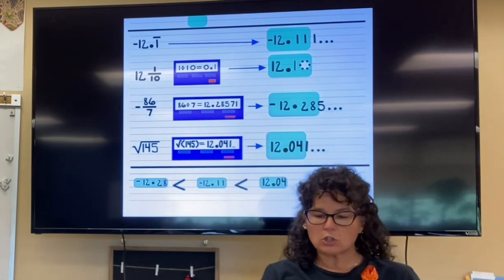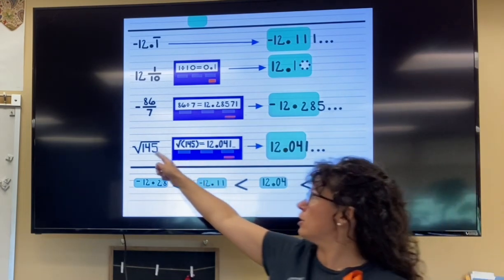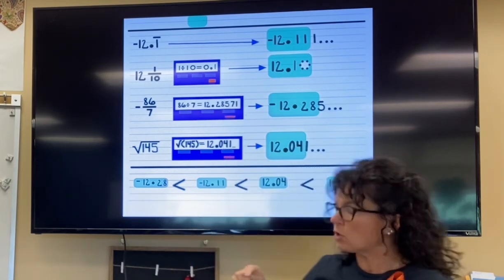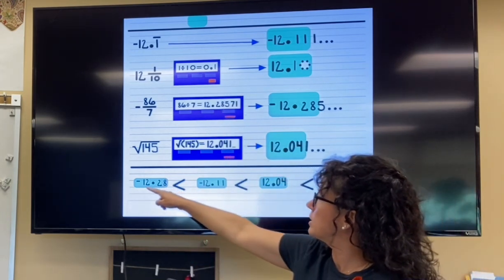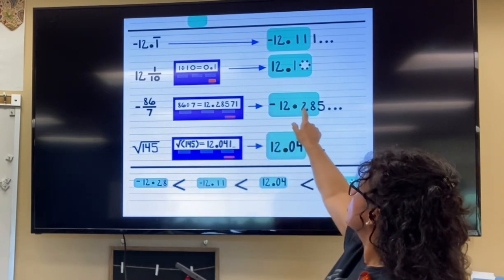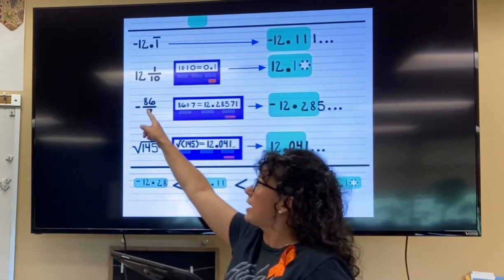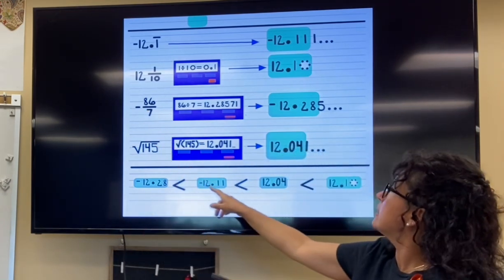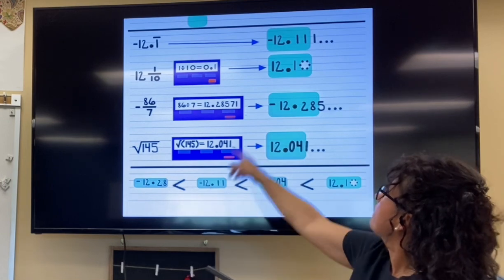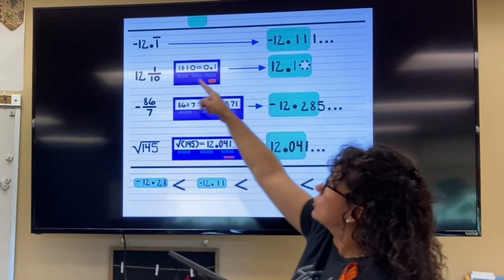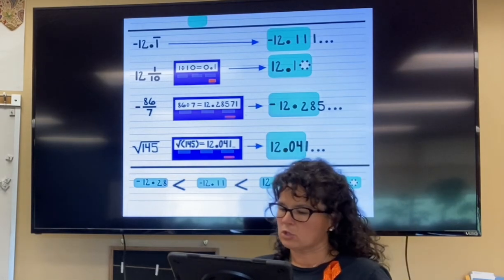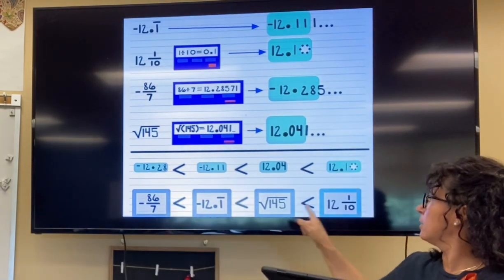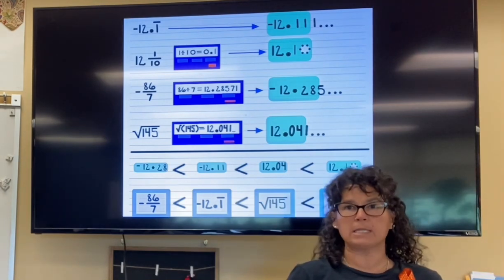Now, what you'll be able to do is take the original numbers and just drag them and drop them. So you're going to take the one that goes with negative 12.28, this one here, which is negative 86 over 7, and that goes first. Then negative 12.11, the top one, you grab that one and drag it and drop it. So if you just drag and drop the originals in the order, you'll be done.